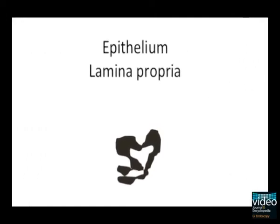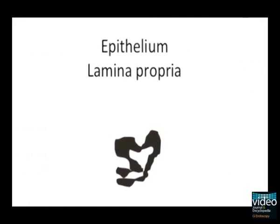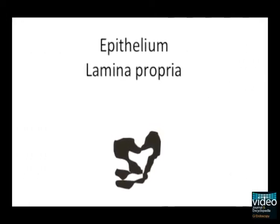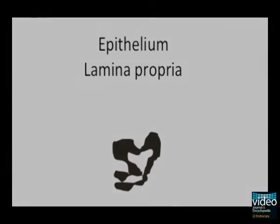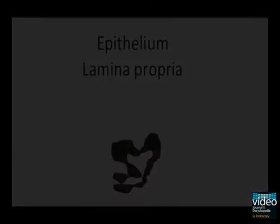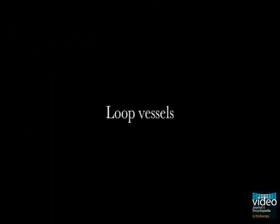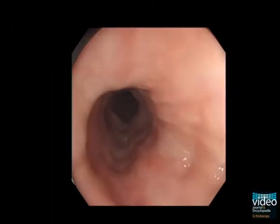The first case demonstrates dot-like loop vessels typical of high-grade intraepithelial neoplasia, cancers limited to the epithelium and the lamina propria.